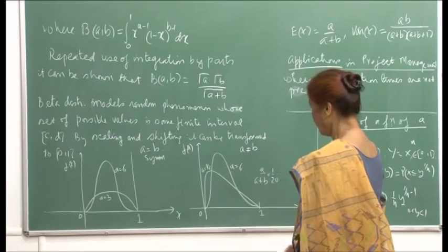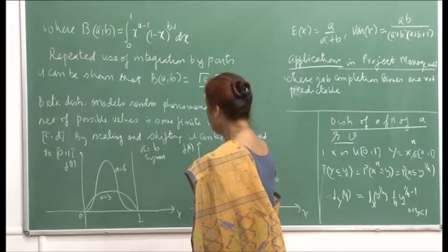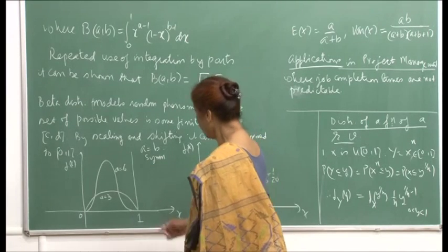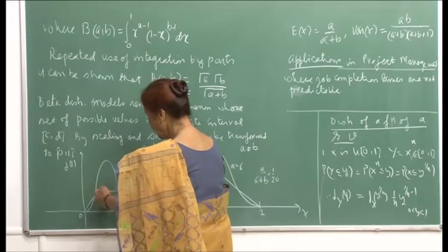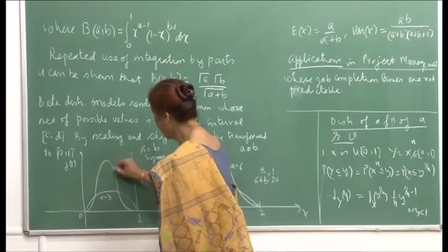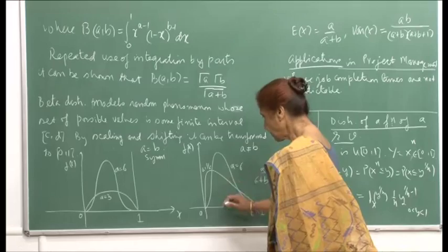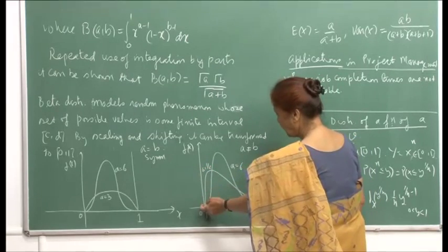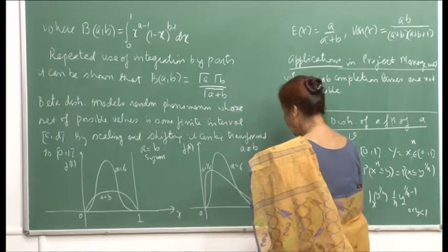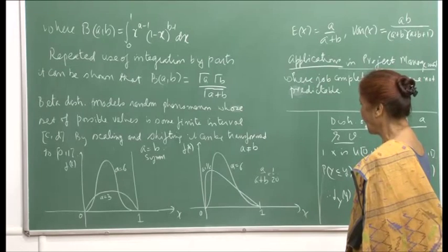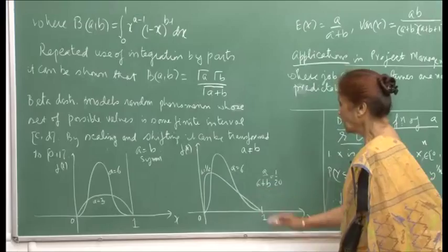When a equals b, the beta PDF is symmetric. For a not equal to b, it is asymmetric and skewed. When a equals 1/2, it is skewed toward the y-axis, and as a increases, the skewness shifts toward the center. These graphs are not drawn to scale; the mean a/(a+b) provides a summary of the shape.